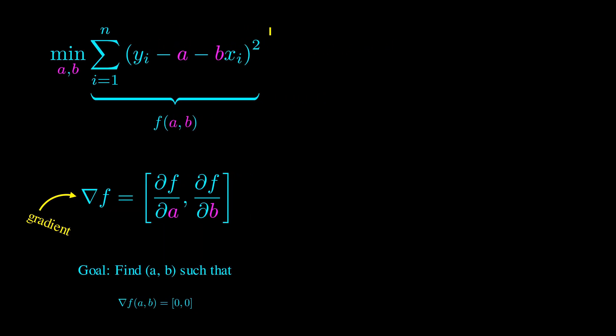Now, to calculate the gradient, we need to take the derivative of f with respect to each variable, while treating the other variable as a constant. Let's first take the derivative of f with respect to a, and then set this equal to zero. We can rearrange the terms to write a in terms of b. Notice that this is just the average of y minus b times the average of x. We can let y-bar and x-bar denote these averages.